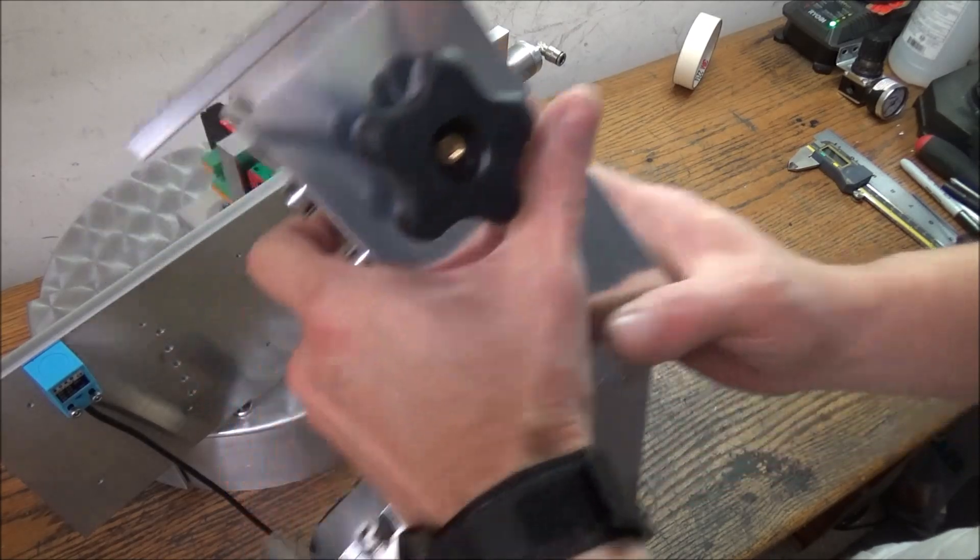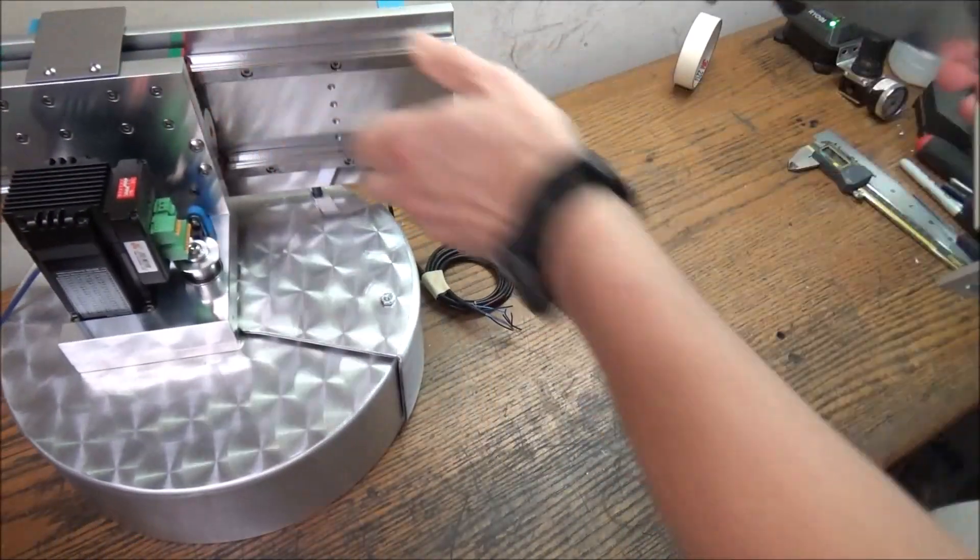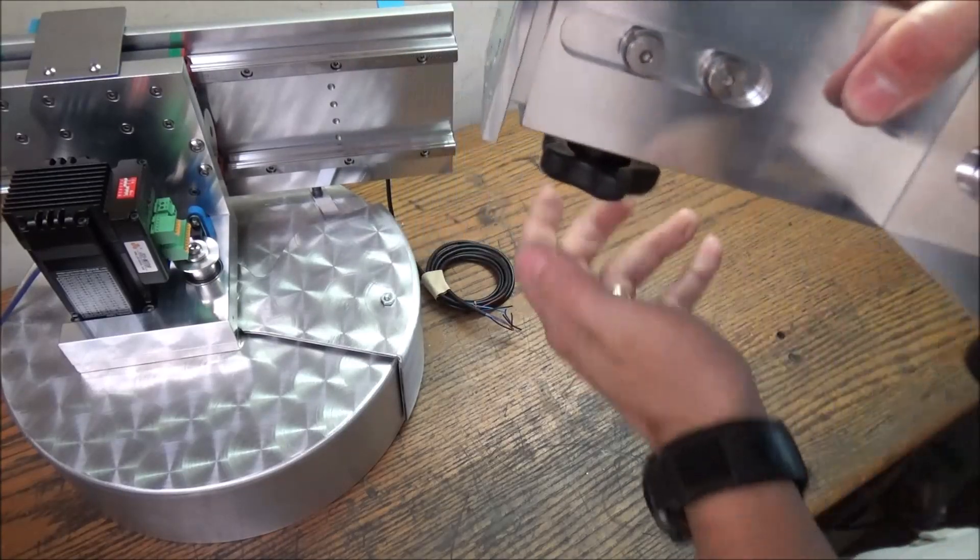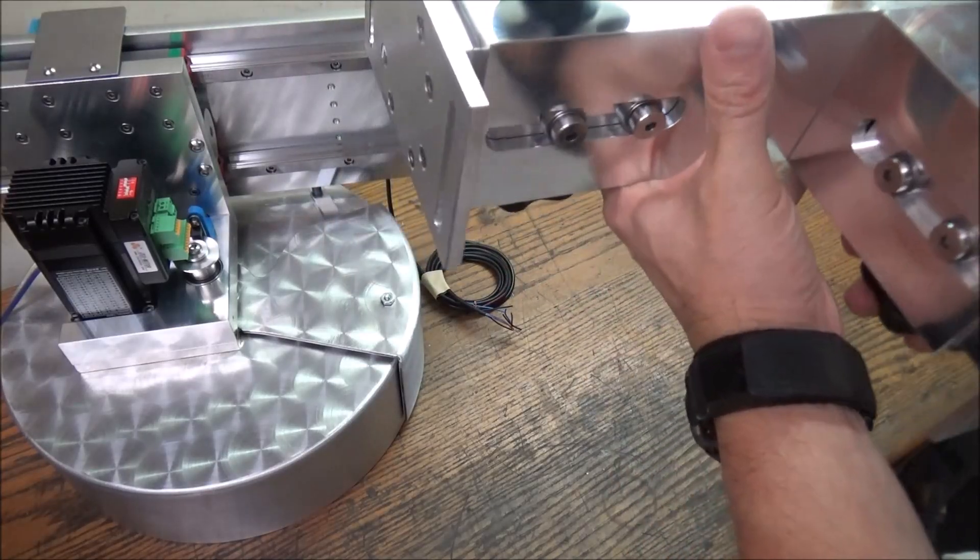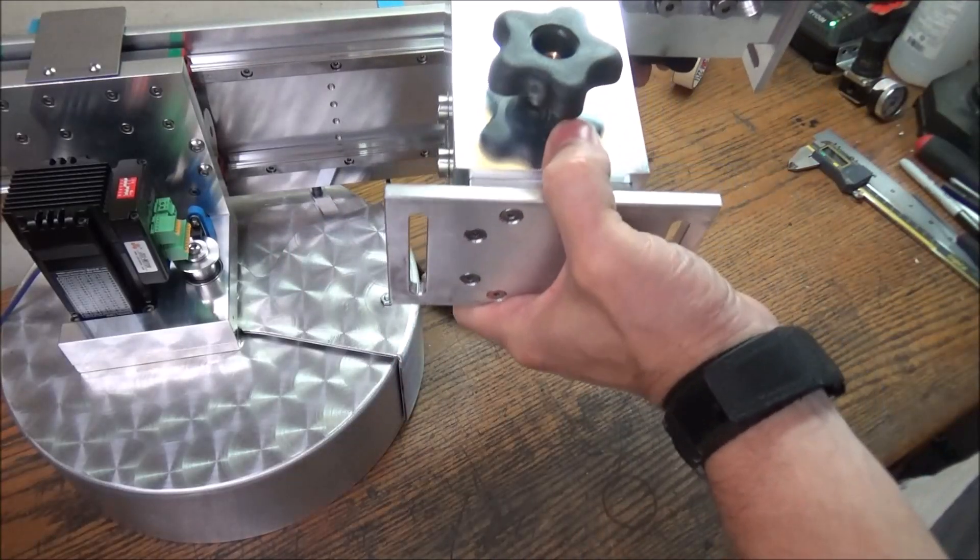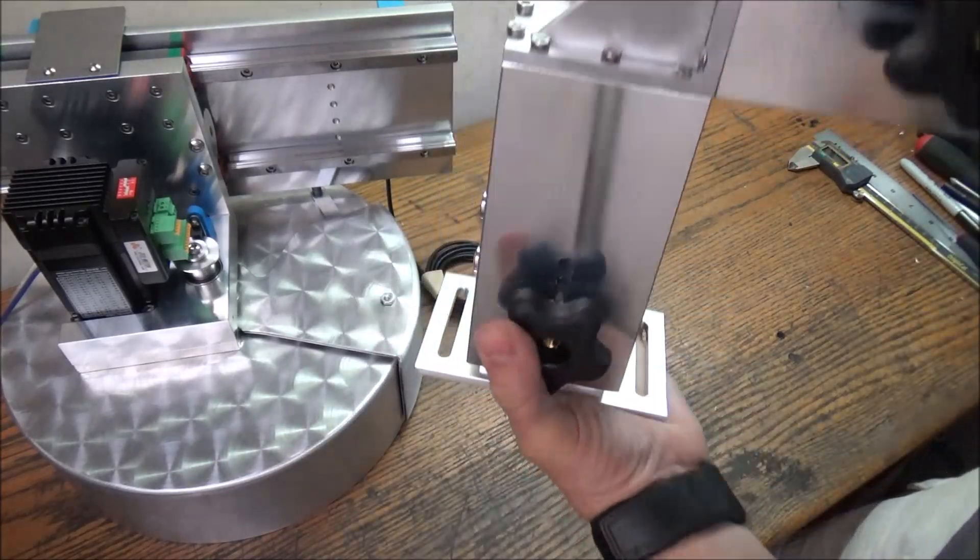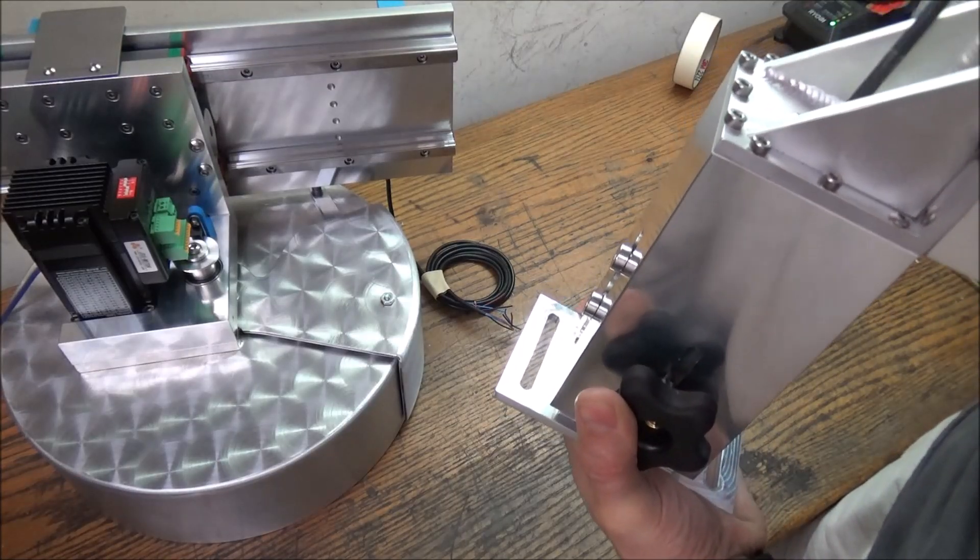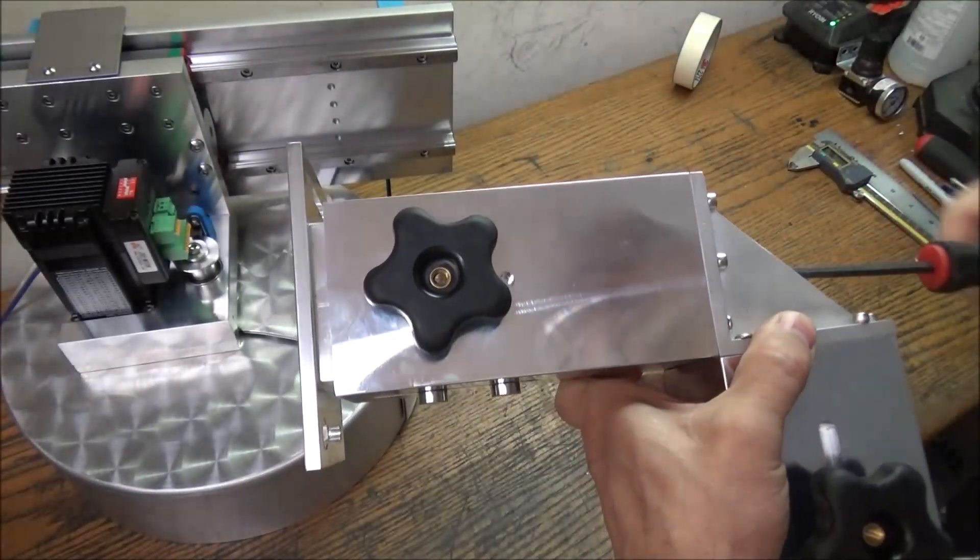We've got these locking knobs here. So once you get the ATC mounting, then you can come back. It's going to be sitting like this and if you need to adjust it in and out for fine adjustment, you just get an allen wrench and it's got a jack screw in here. You can just move this in and out.